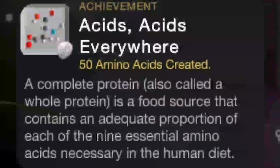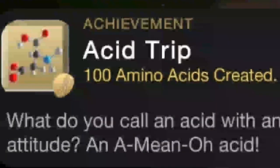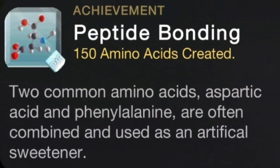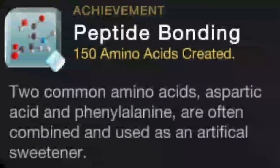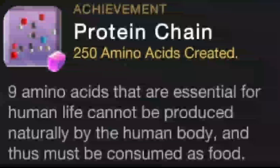A complete protein, also called a whole protein, is a food source that contains an adequate proportion of each of the nine essential amino acids necessary in the human diet. What do you call an acid with an attitude? An amino acid. Two common amino acids, aspartic acid and phenylalanine, are often combined and used as an artificial sweetener. Nine amino acids that are essential for human life cannot be produced naturally by the human body, and thus must be consumed as food.